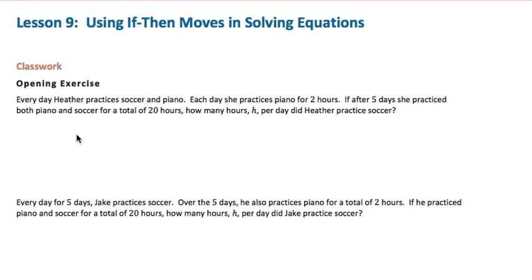So what we have then is soccer and piano. Piano is two hours per day, which we're multiplying times five days. And soccer equals H, or five times H more accurately, because we're talking about five days. Then if we write our equation, two times five plus five times H equals 20 hours.